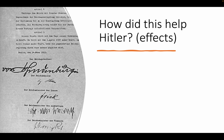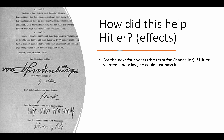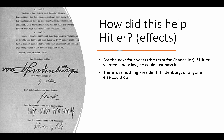So how did this help Hitler? For the next four years — basically the term for chancellor, similar to being president of the U.S. — if Hitler wanted a new law, he could just pass it whenever he wanted. There was nothing President Hindenburg or anybody else could do. Hindenburg could still dismiss Hitler if he wanted to, but he couldn't refuse to pass these laws because they weren't going through Hindenburg anymore.